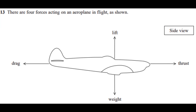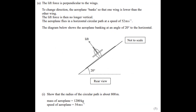We have a question about four forces acting on an aeroplane in flight. The lift force is perpendicular to the wings. To change direction, the aeroplane banks so that one wing is lower than the other, so the lift is no longer vertical. The aeroplane flies in a horizontal circular path at a speed of 54 m/s, banking at an angle of 20 degrees to the horizontal. The radius of the circular path is about 18,800 meters and the mass of the aeroplane is 1200 kg.